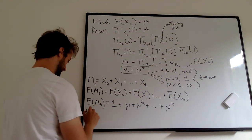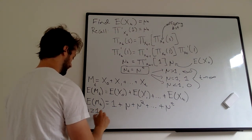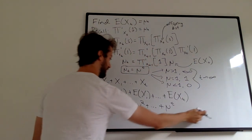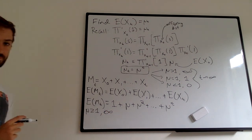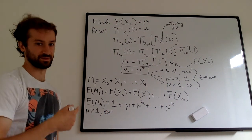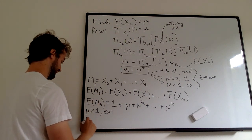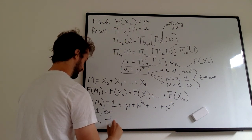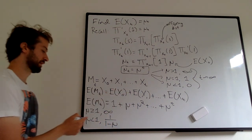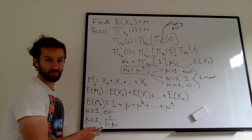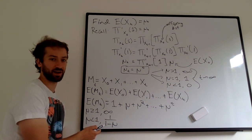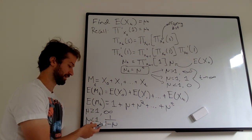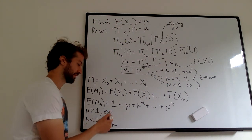If mu is greater than or equal to one, the expected value of M sub t goes to infinity, which makes sense — the total population ever expected will be infinite. If mu is less than one, this sum converges to one over one minus mu. It's a geometric series. The smaller mu is, the smaller the number — for example, one divided by one minus 0.1 gives a smaller total than one divided by one minus 0.9, which gives ten.